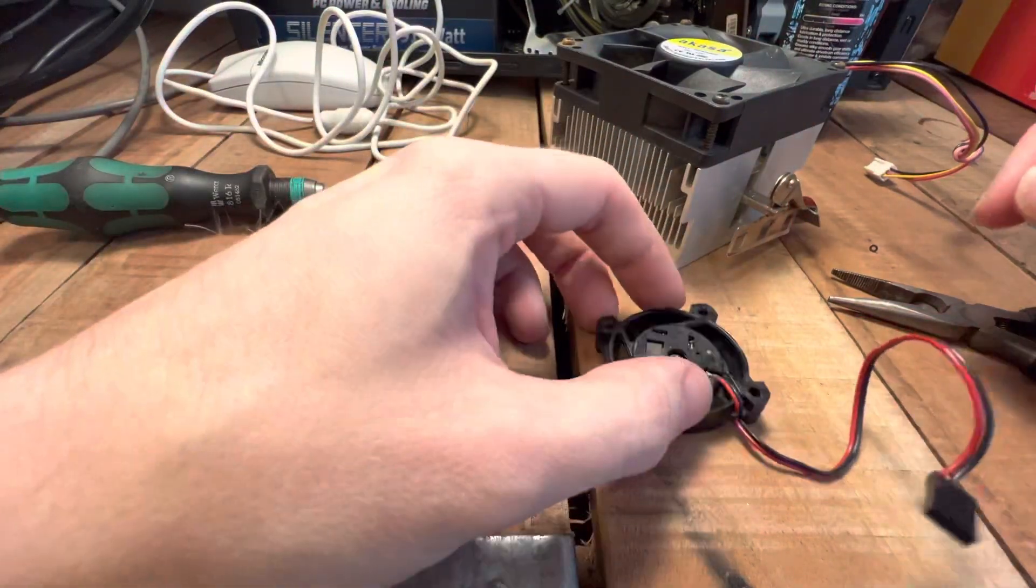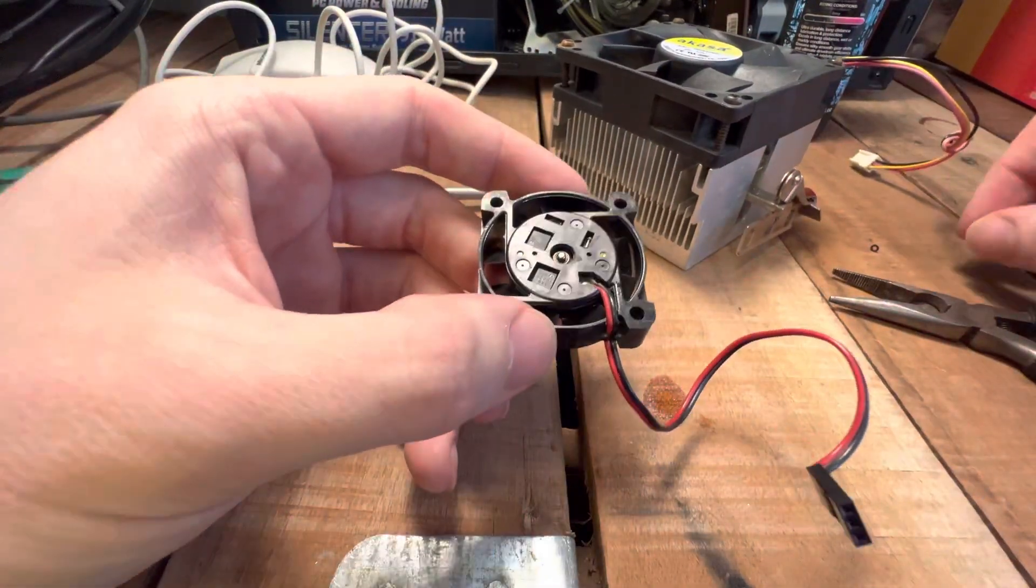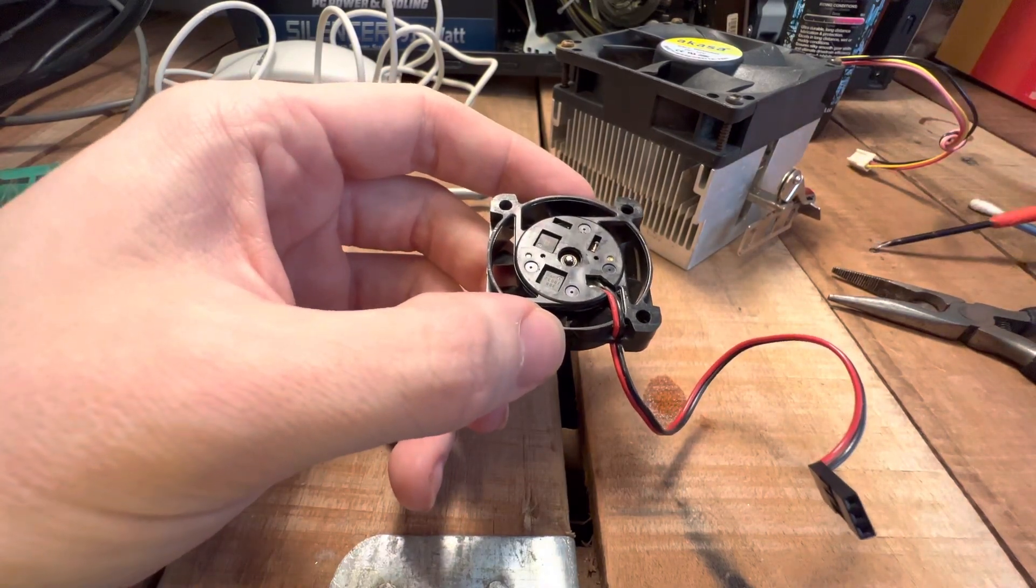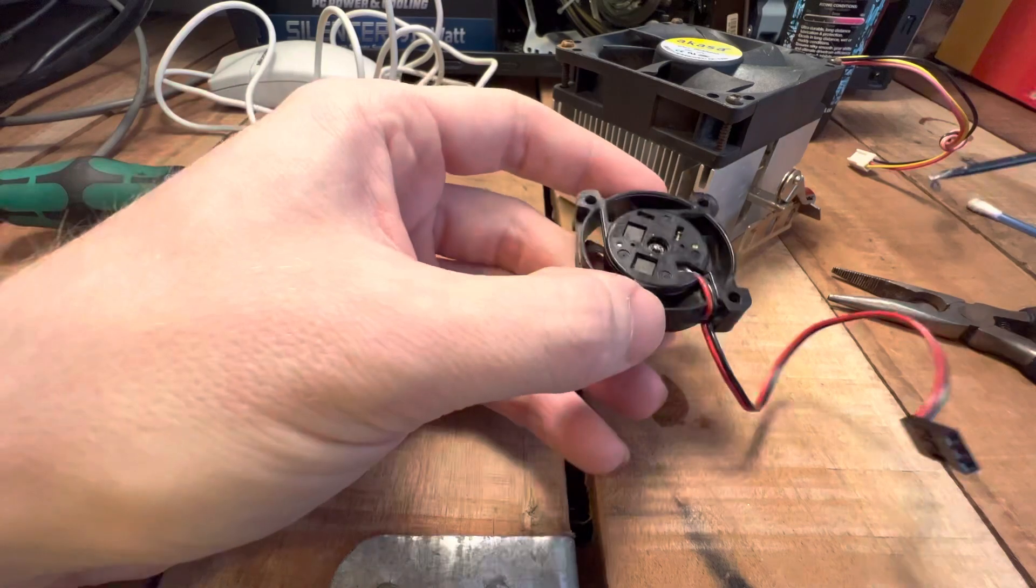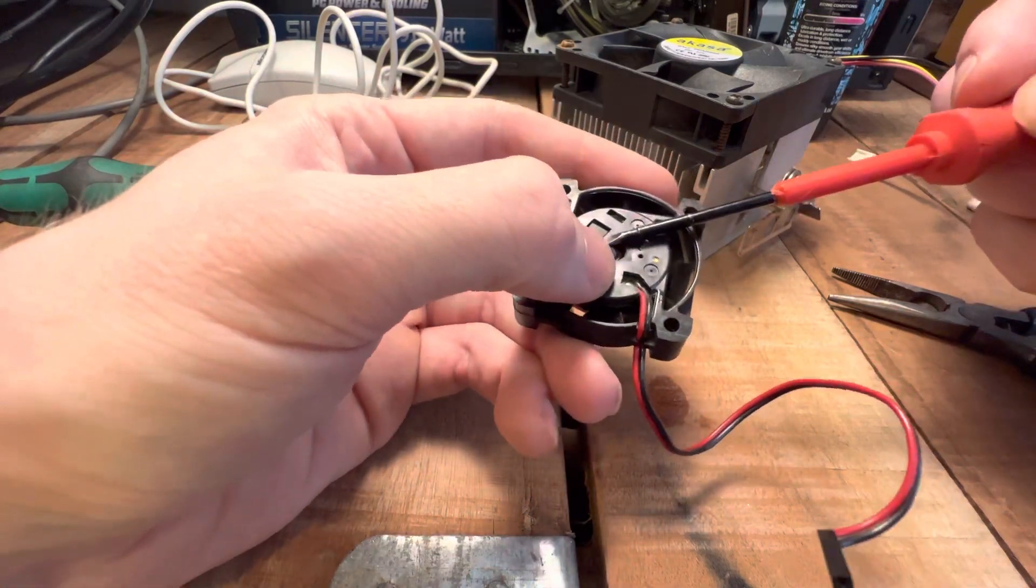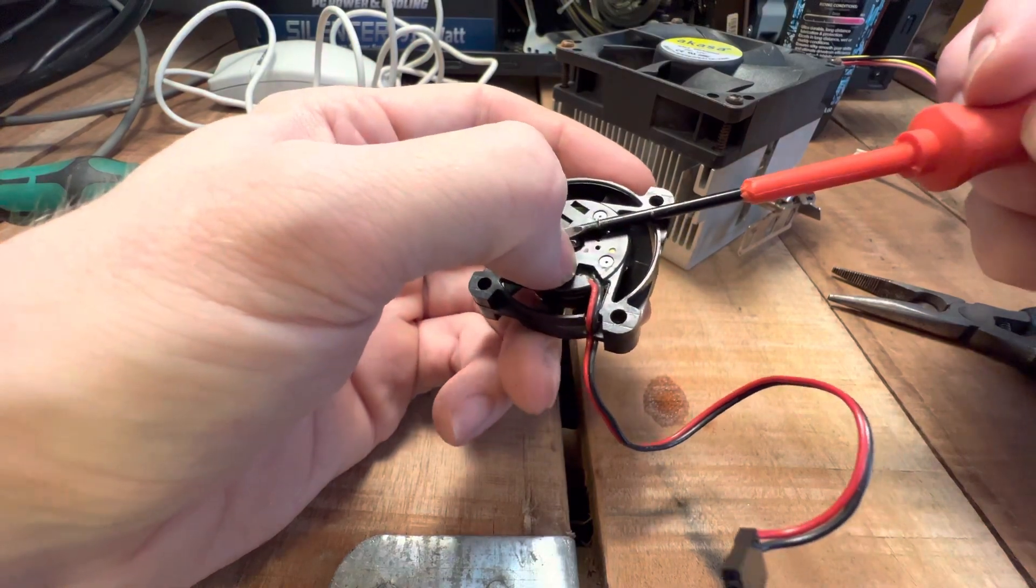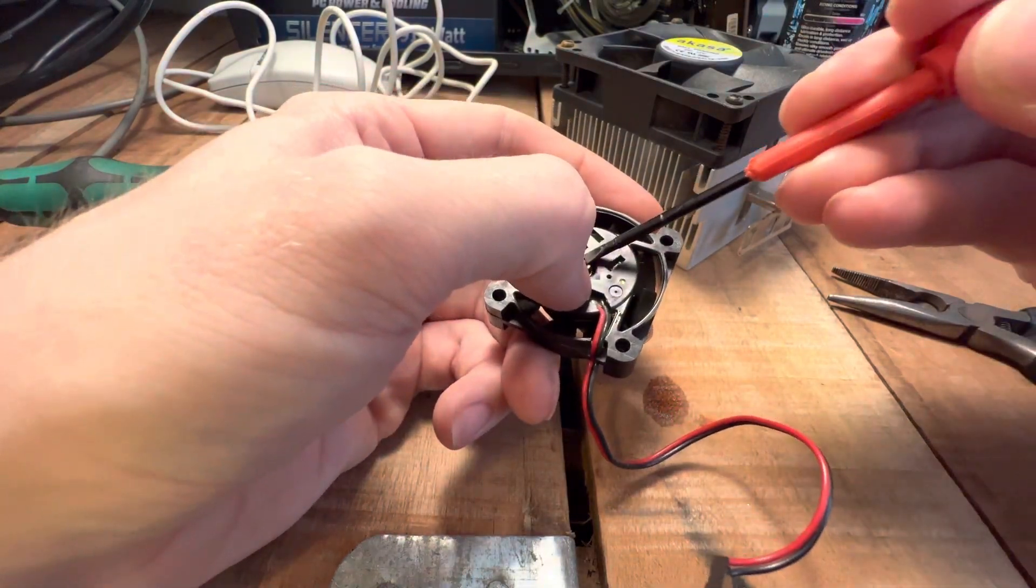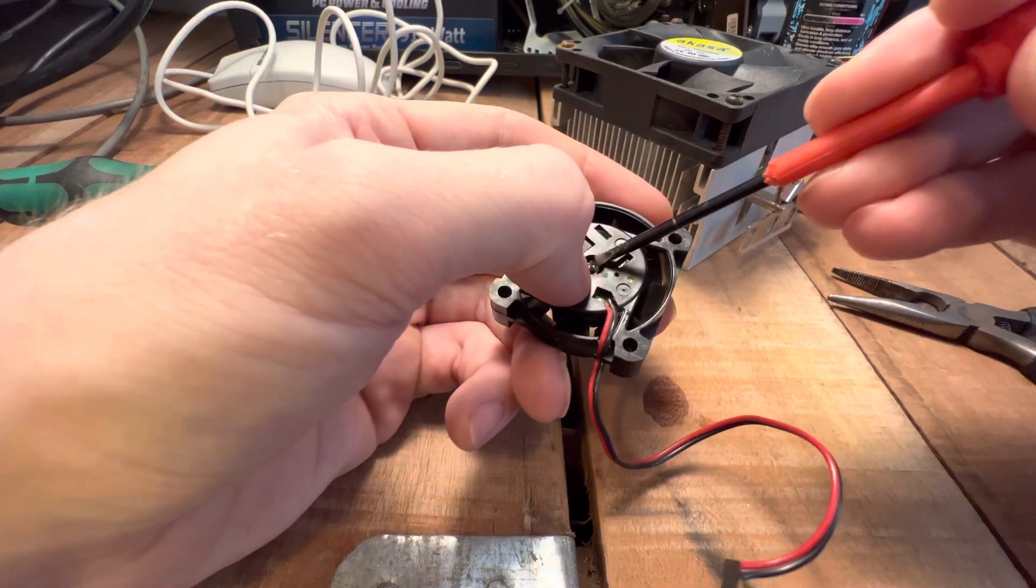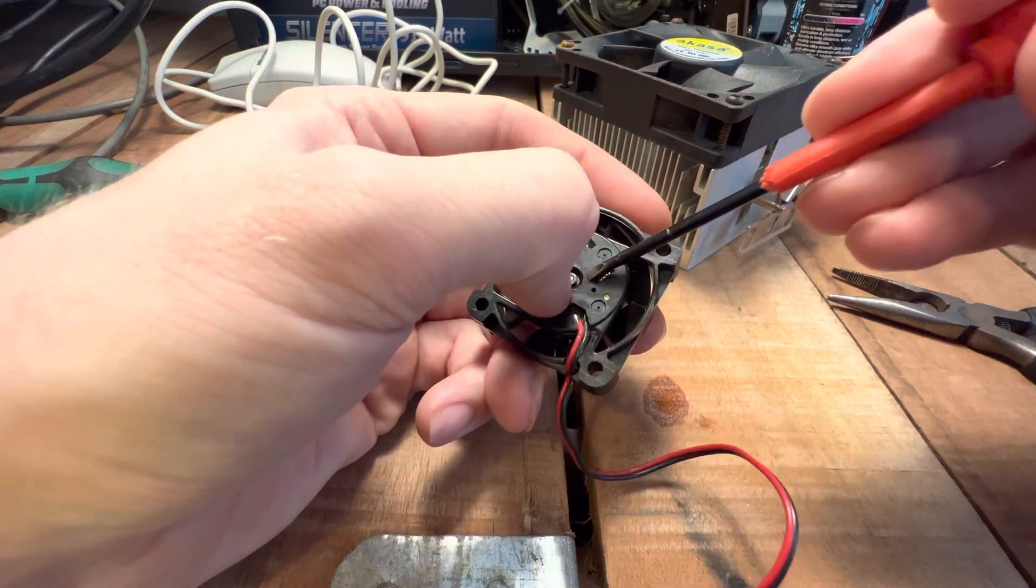You'll feel it like magnetically attach. So once that's back on, now you can put your little retaining clip on, and this is pretty much the hardest part.